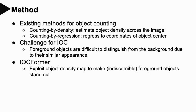Here we introduce our method. Existing methods for object counting can be grouped into two directions: first, counting by density, which is to estimate object density across the image; and second, counting by regression, which is to regress the coordinates of object centers.